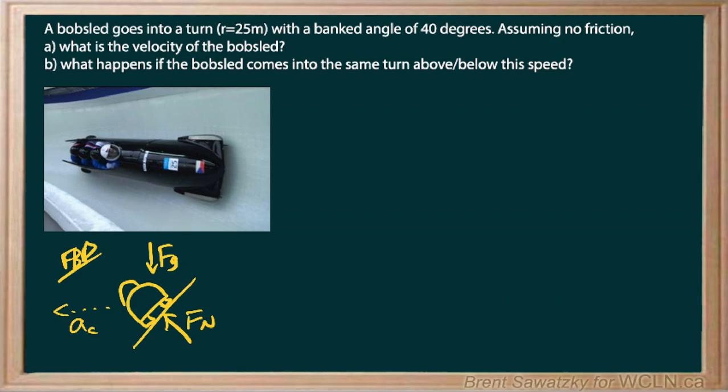So from there we can stop and say okay f net equals ma. Good old Newton's second. And if we were to write this out as a vector addition we would say if we took fn and we added the fg we would end up with our acceleration there. And these all being vectors we can draw this out as a vector diagram. So let's do that.